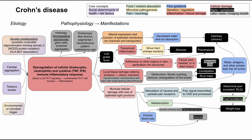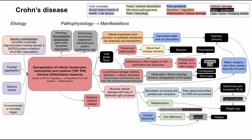Chronic blood loss leads to anemia through multiple mechanisms. Bleeding into the gut over time, even in small amounts, combined with malabsorption leads to iron deficiency anemia. Additionally, systemic cytokine release decreases erythropoietin production, resulting in decreased bone marrow function — so the body is both losing blood and producing less to replace it. Anemia then leads to fatigue and weakness.